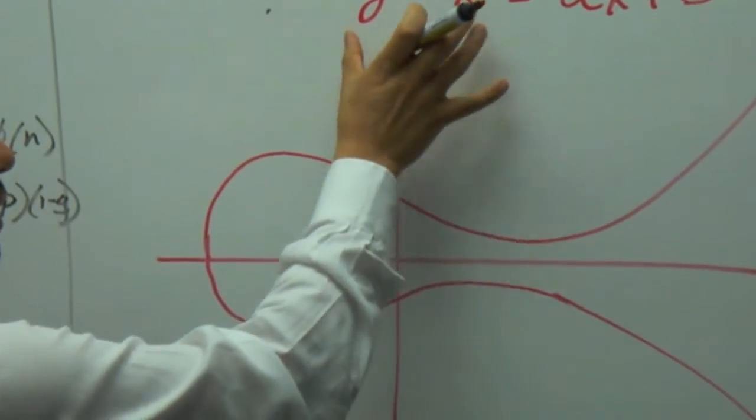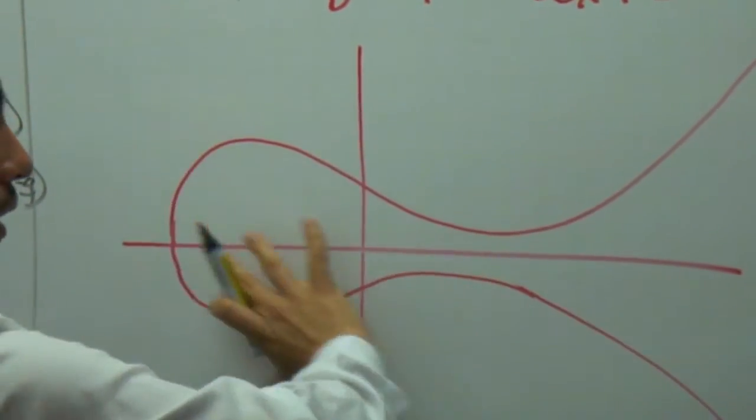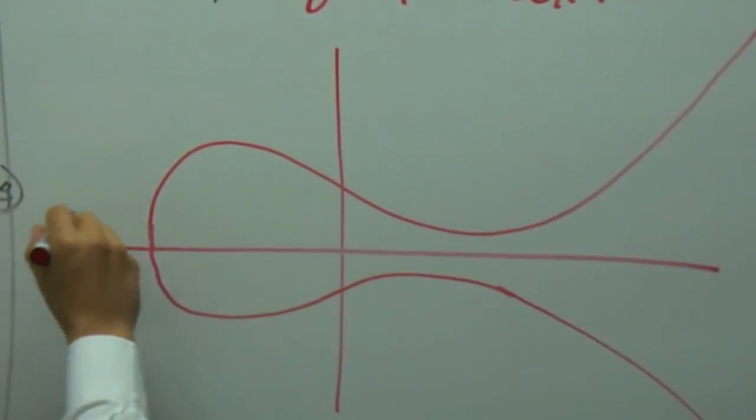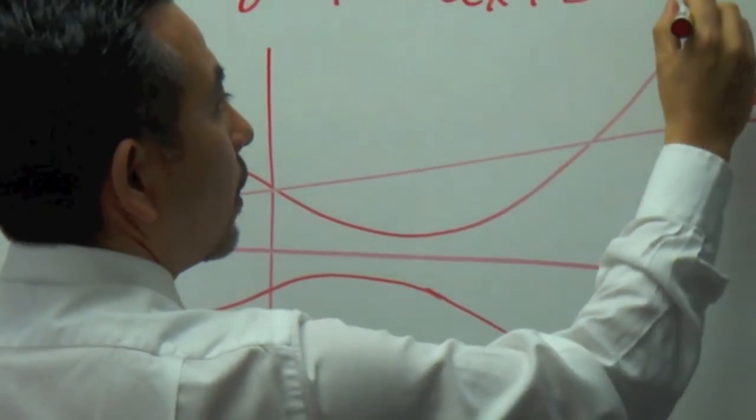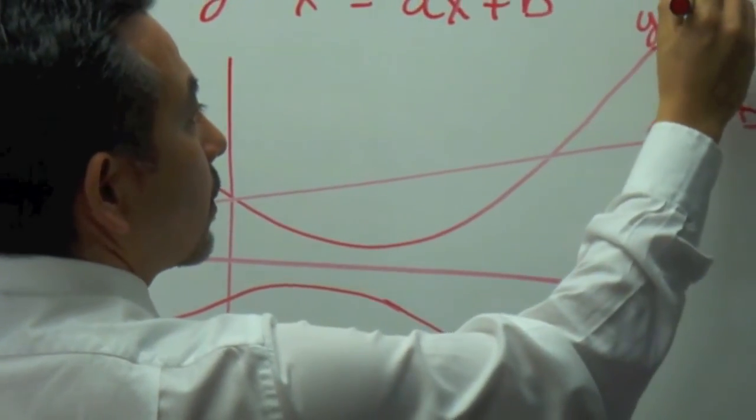Now, guess what? This is equal to this, so this is equal to a line. This is the line. This is ax plus b, and this is y squared minus x cubed.